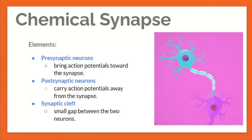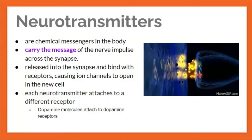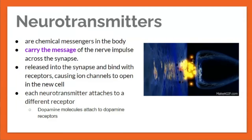The chemical synapse has three elements: the pre-synaptic neuron, which brings action potentials toward the synapse; the post-synaptic neuron, which carries action potentials away from the synapse; and the synaptic cleft, which is the small gap between the two neurons.